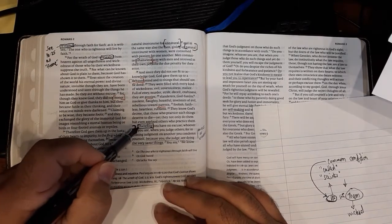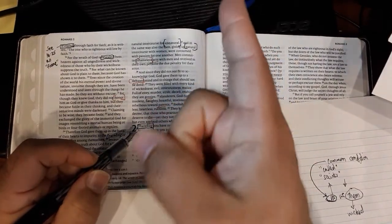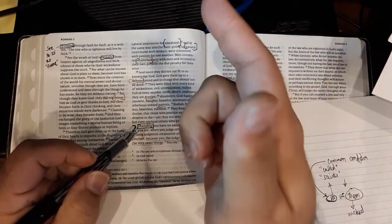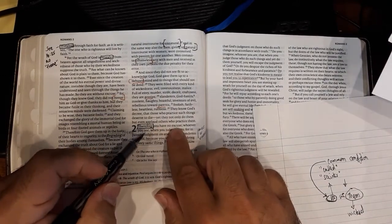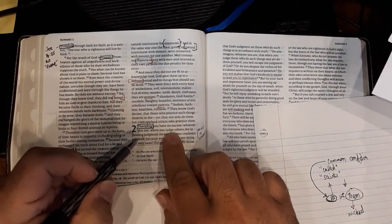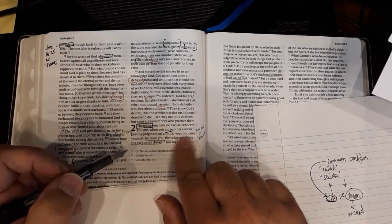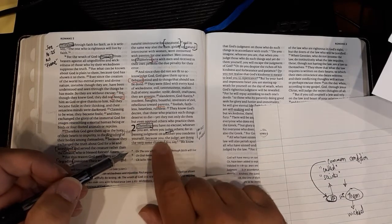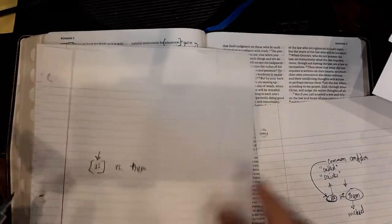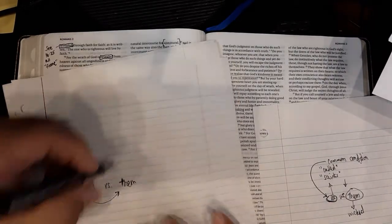He turns it right back on them. Remember when you're pointing at someone telling them about their sin, there are three fingers facing back at you. Therefore, you have no excuse, whoever you are, when you judge others for in passing judgment on another, you condemn yourself because you, the judge are doing the very same things. He just pulled the rug under you. He said, it's us versus them. But really, you're just like them through your judgment.